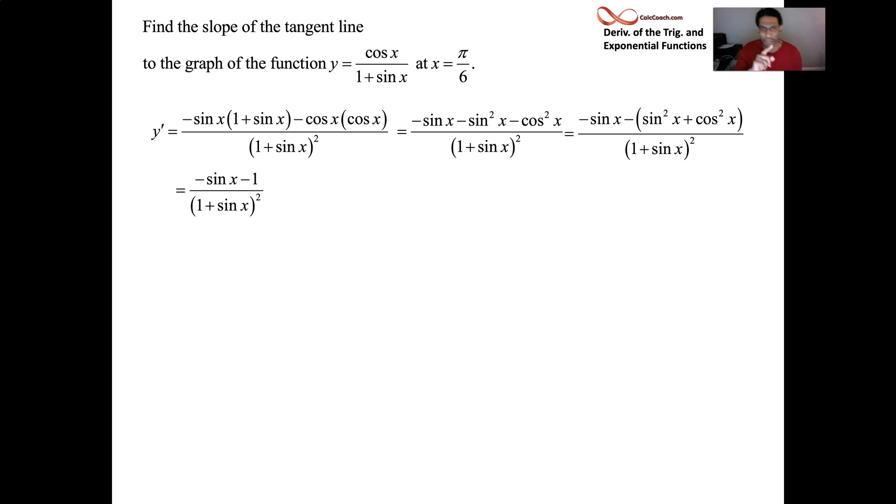Something strange happens here too. At this point, we can factor out a negative 1 from the numerator, and we'd have, I'm going to write it in the reverse order, 1 plus sine x. Why would I write it like that? So you can look at the denominator and see the cancellation that happens. So it's very strange, but it happens. And we end up with the following for our derivative: negative 1 on top of 1 plus sine x.